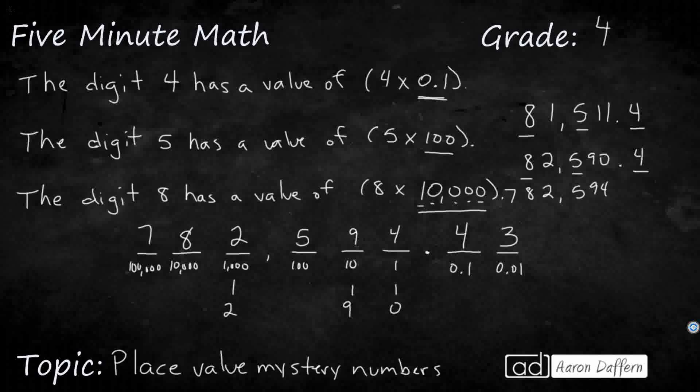780,594, and 4,300ths. Does it still meet our three clues? 4 in the 10th place, yes. 5 in the 100ths, yes. 8 in the 10,000ths, yes. So all of those numbers can work.